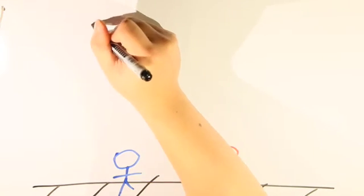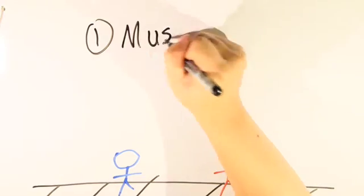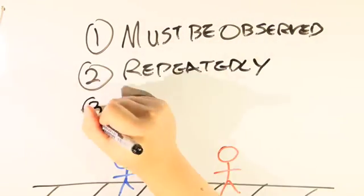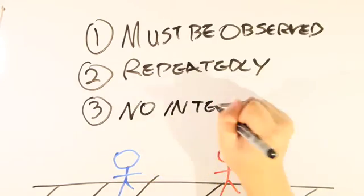By definition, a familiar stranger must be one seen, two repeatedly over time, and three without any social interaction.